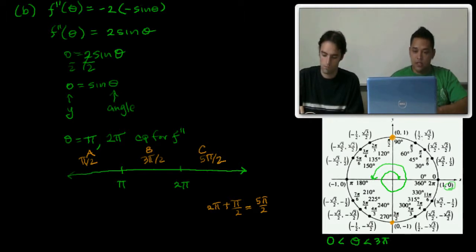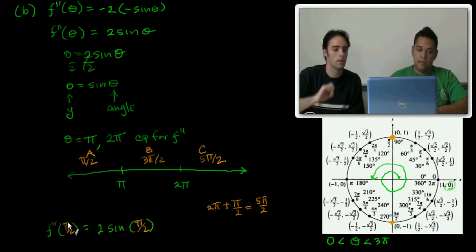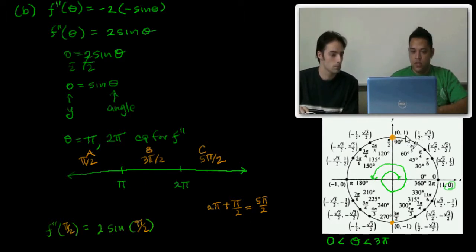Now let's plug them in to our second derivative, which is 2sin(θ). Let's go ahead and plug in π/2 first. And what's the evaluation of this? On the unit circle, I noticed that at π/2 the y-coordinate is 1. So this is going to be 1. 1 times 2 is 2. So that's region A. That indicates that we're increasing from here to here.